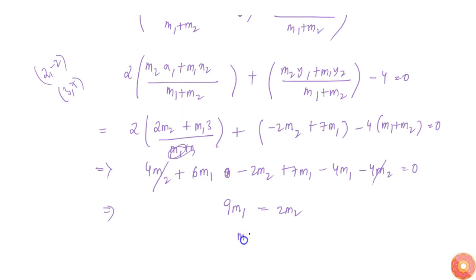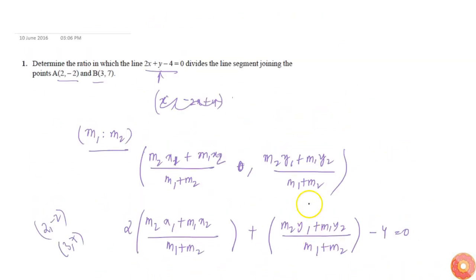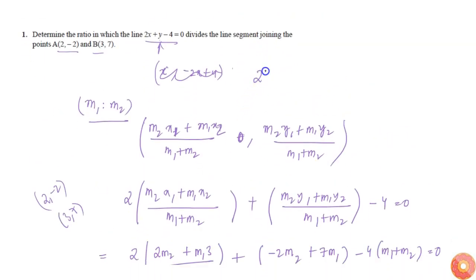That implies m1/m2 = 2/9. Therefore that line divides it in the ratio 2:9.